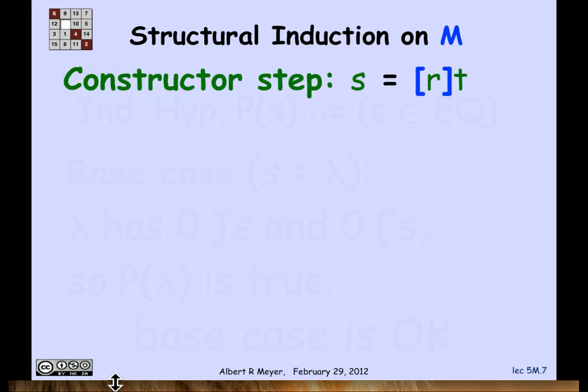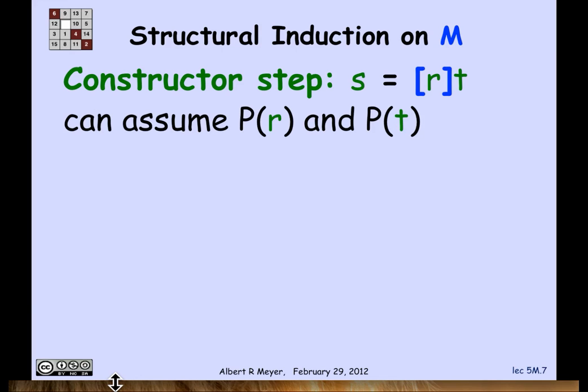Now we consider the constructor case. For M, there's only one constructor: if r and t are in M, then so is s, which you get by putting brackets around r and following it by t. Here's the argument: we're trying to prove that s has an equal number of left and right brackets, and we're allowed to assume that r does and so does t.